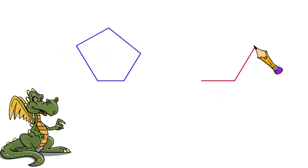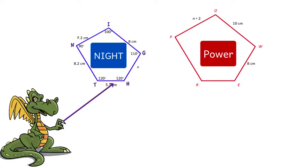Let's look at some examples. We have two pentagons, knight and power, that are similar.